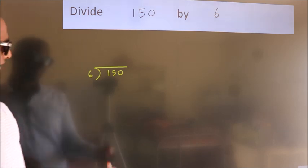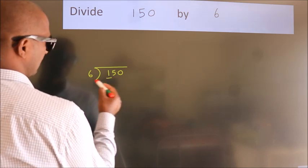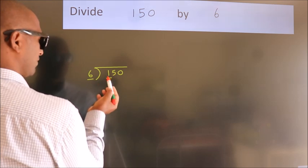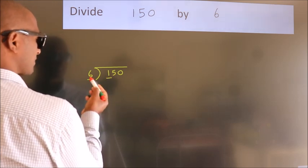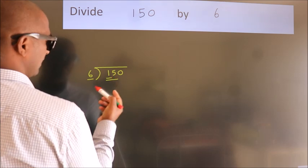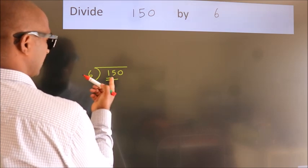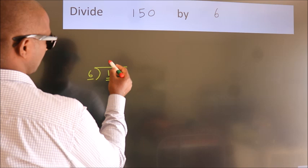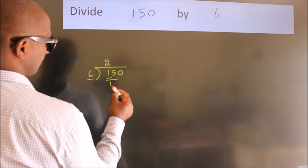Next, here we have 1, here 6. 1 is smaller than 6, so we should take two numbers, 15. A number close to 15 in the 6 table is 6 twos, 12.